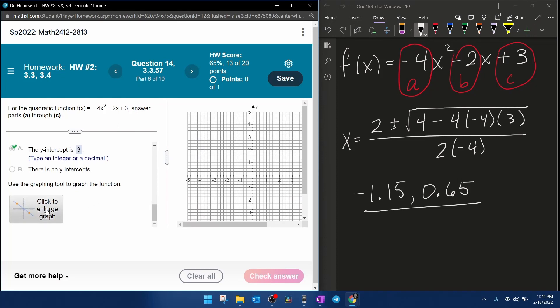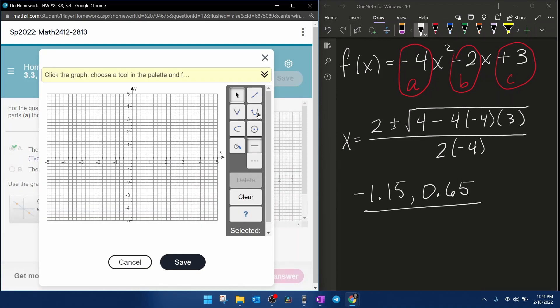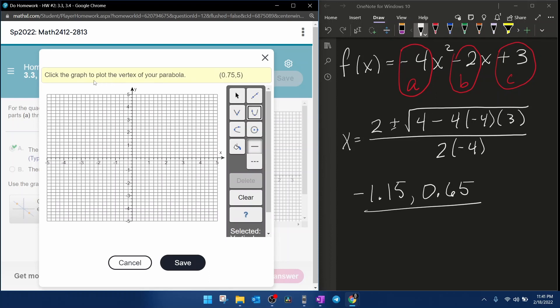The next part wants us to graph. So again, we're going to use our parabola tool. And if you read up here in the yellow box, they want the vertex first. So we're going to have to click where the vertex is first. All right,